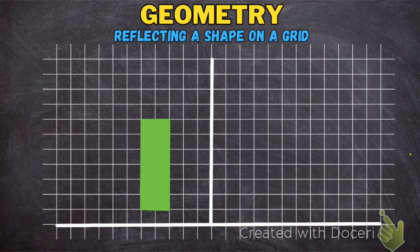So now we're going to reflect the shape horizontally. This here is the mirror line. I'm going to start with this corner here — it is one, two, three to the line, so going past we're going to go one, two, three — and that's where it will be.